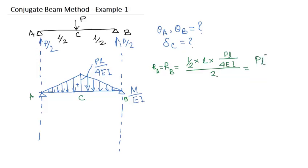So it becomes PL squared by 16EI. So these are theta_A and theta_B both. We have determined the slope at two extreme points A and B of the beam.